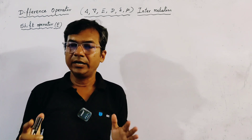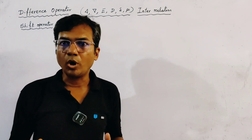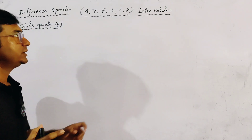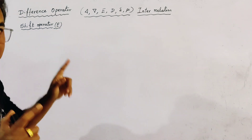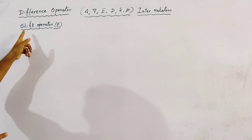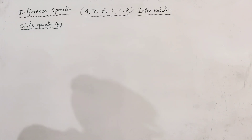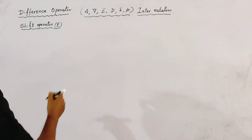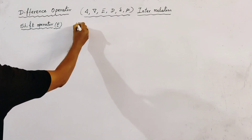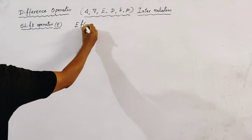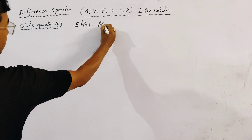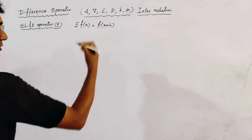In the second lecture on differential operators and their interrelation, we first define the shift operator. The definition of shift operator is: E of f(x) is equal to f(x + h).